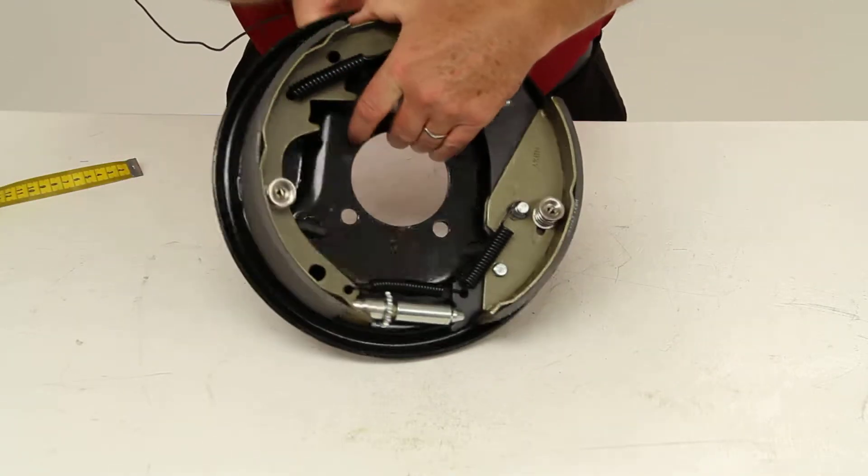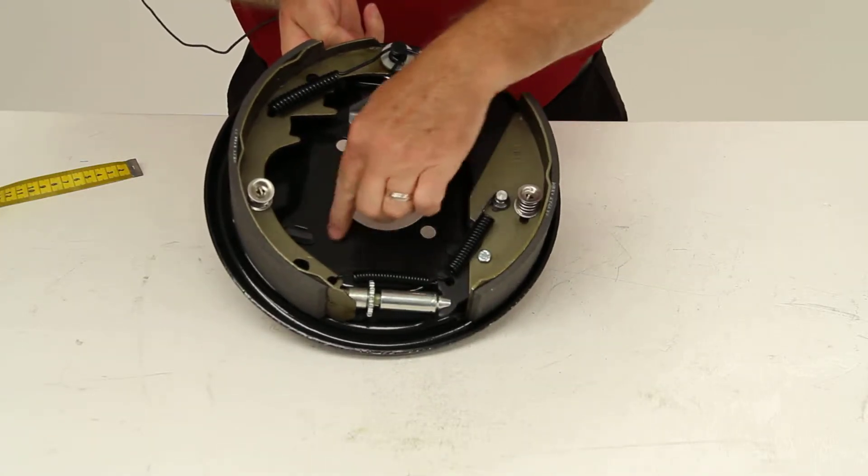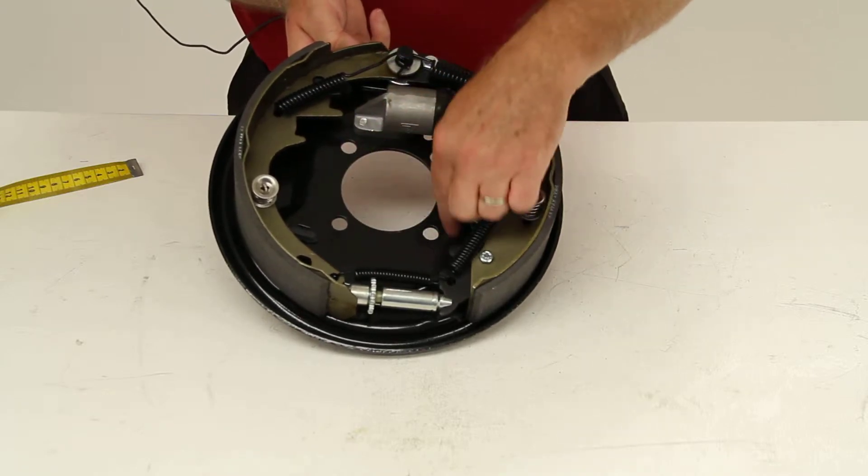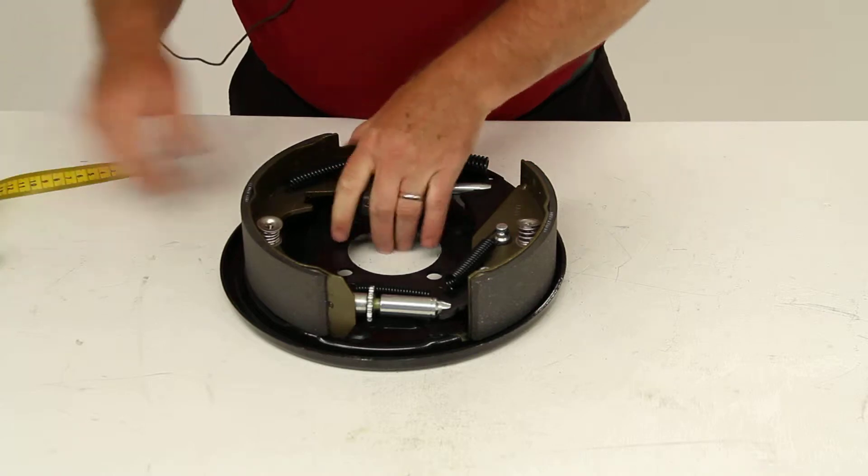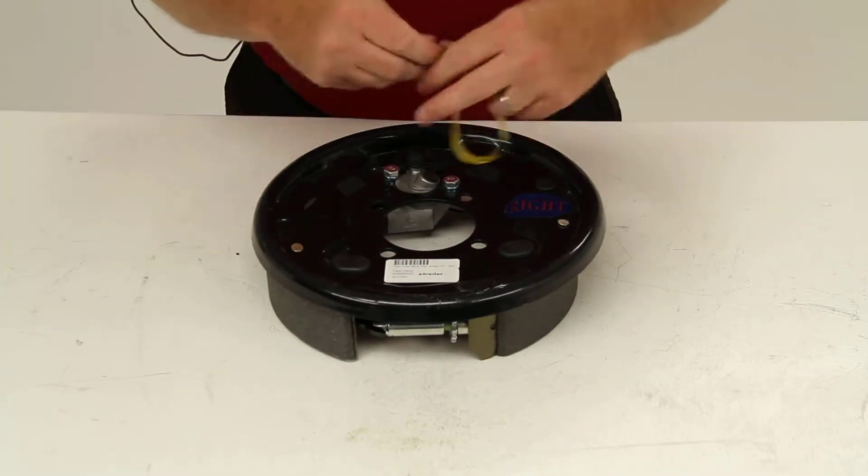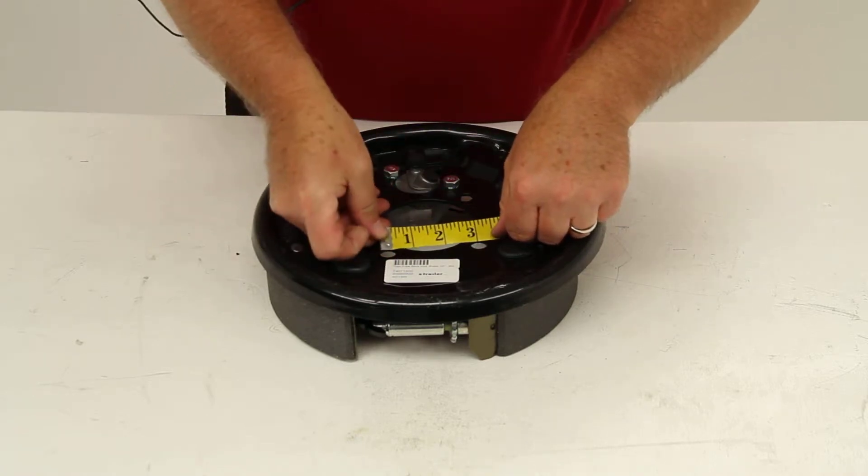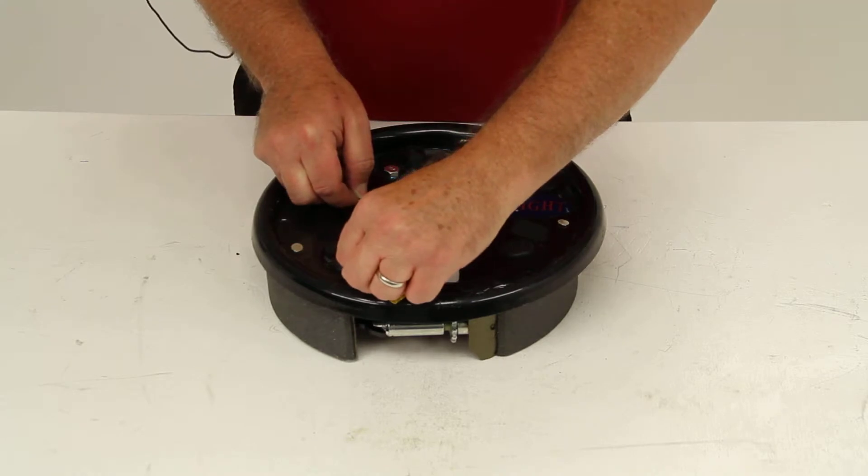This uses a mounting flange bolt pattern of 4 lugs or 4 bolts, and the distance between those mounting holes from center to center is 2 7/8 inches both ways.